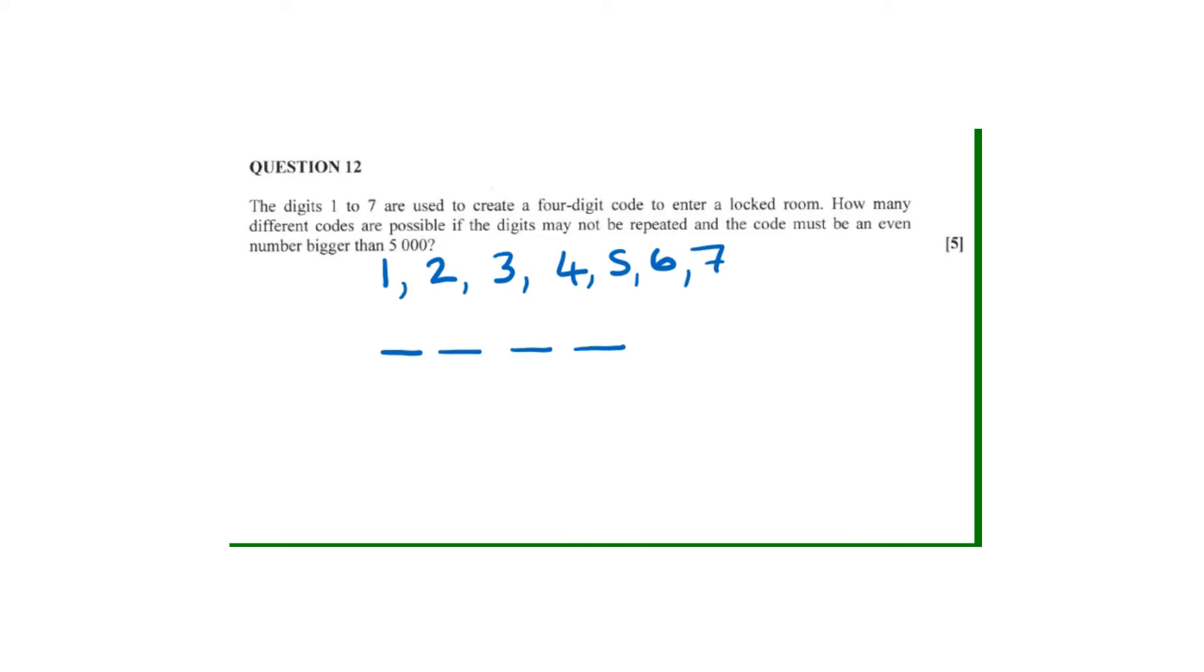For it to be an even number, it means it can end with a 2, with a 4, with a 6. Any number that ends with those digits will be an even number.